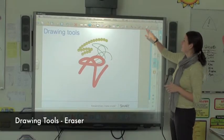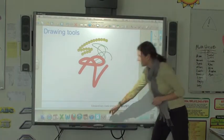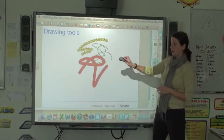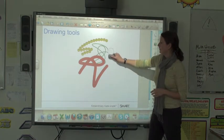Moving along our toolbar, the next one we see is the eraser. You can always use the eraser from the bottom from your pen tray and that will erase just like that.